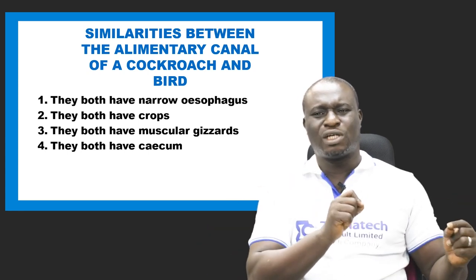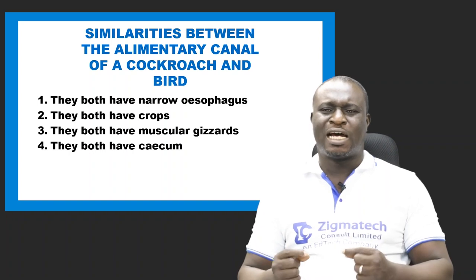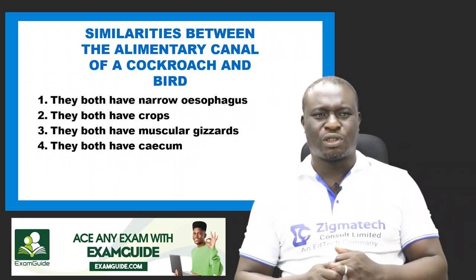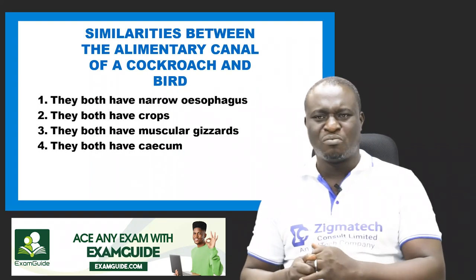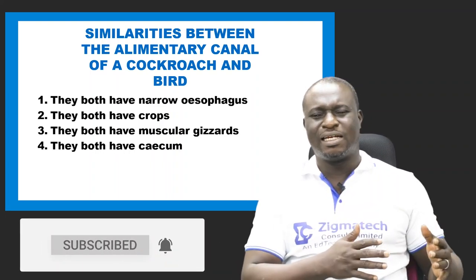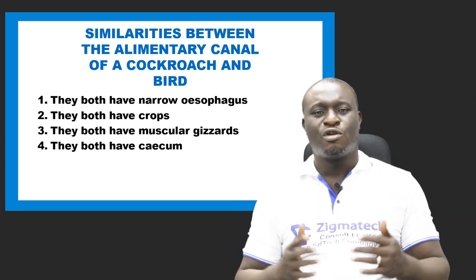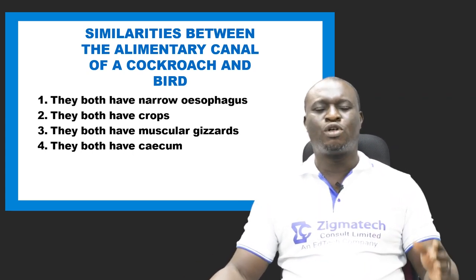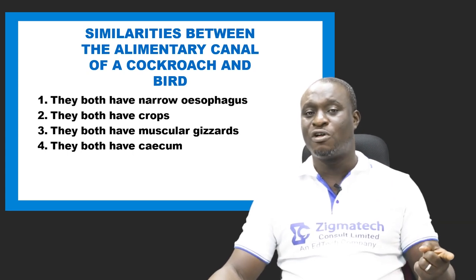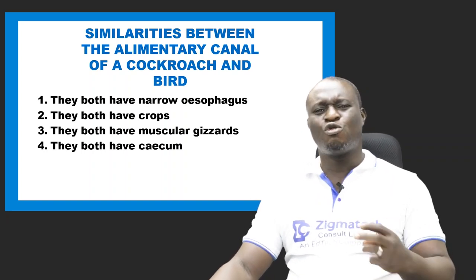Now let's look at the similarities between the alimentary canal of a cockroach and that of a bird. Both have a narrow oesophagus. Both have crops where food is stored temporarily. Both have muscular gizzards for grinding food into smaller particles. They both have a caecum. And both have an anus — though in birds it is called a cloaca.